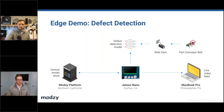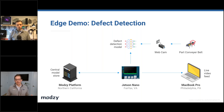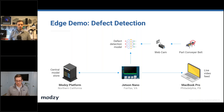For this demo, we've simulated a manufacturing use case. Let's take a manufacturer who wants to automate their QA and QC process. They're manufacturing a bunch of parts that go through the assembly line, and they want a computer vision model running on a web camera to detect whether or not there are any defects that happened in the manufacturing process.